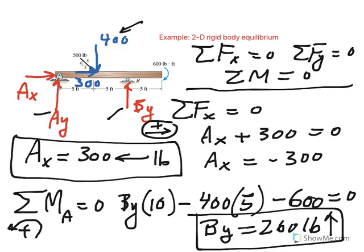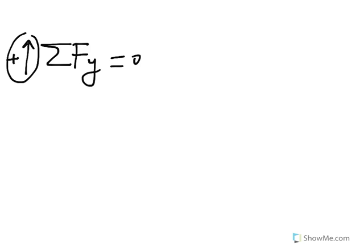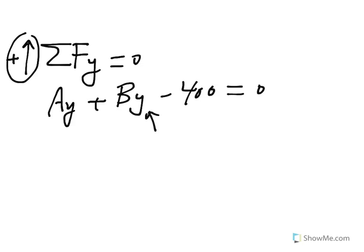So Ay, By positive up, and 400 going down. So Ay plus By minus 400 equals 0. Now keep in mind that By is already determined, and it's 260.